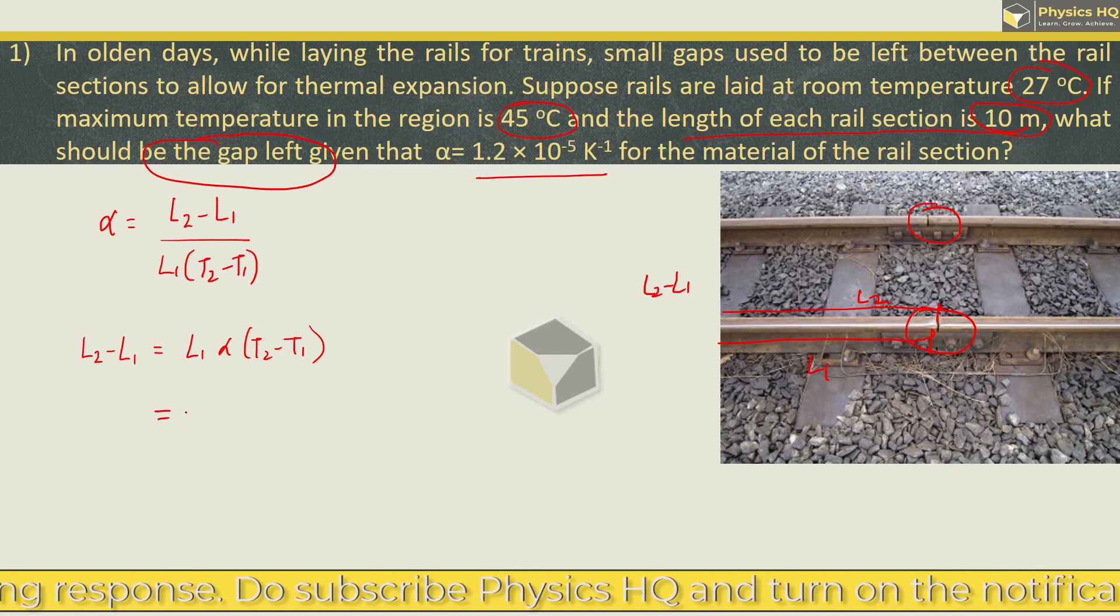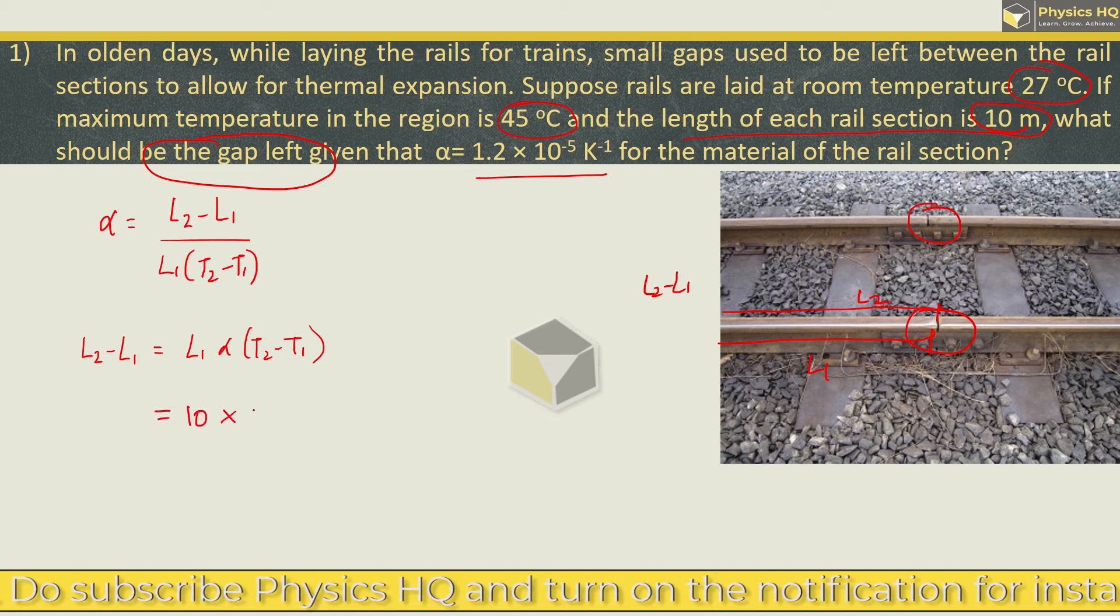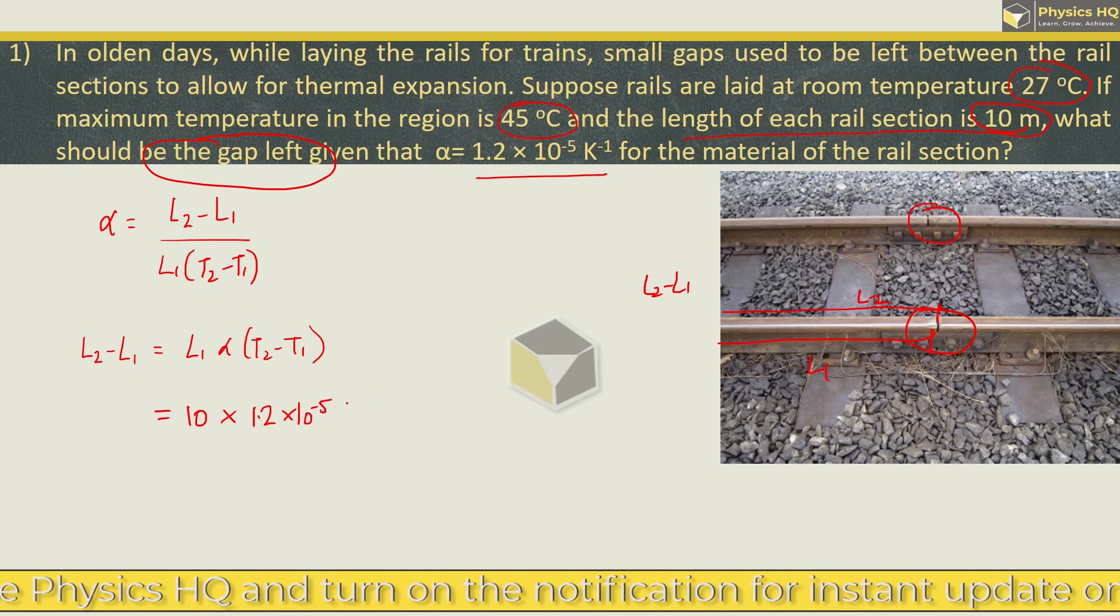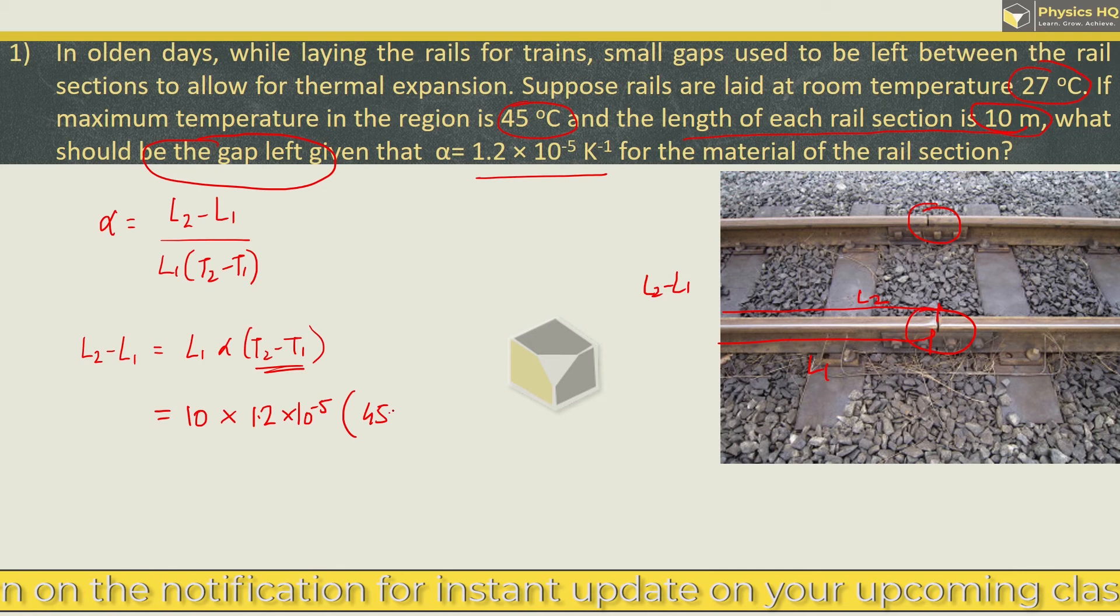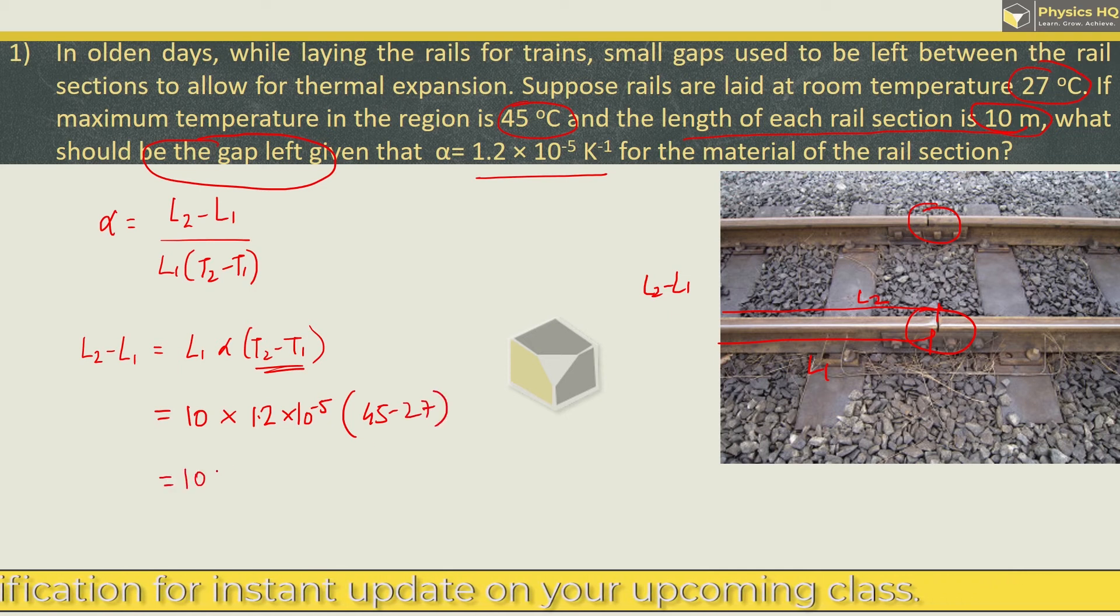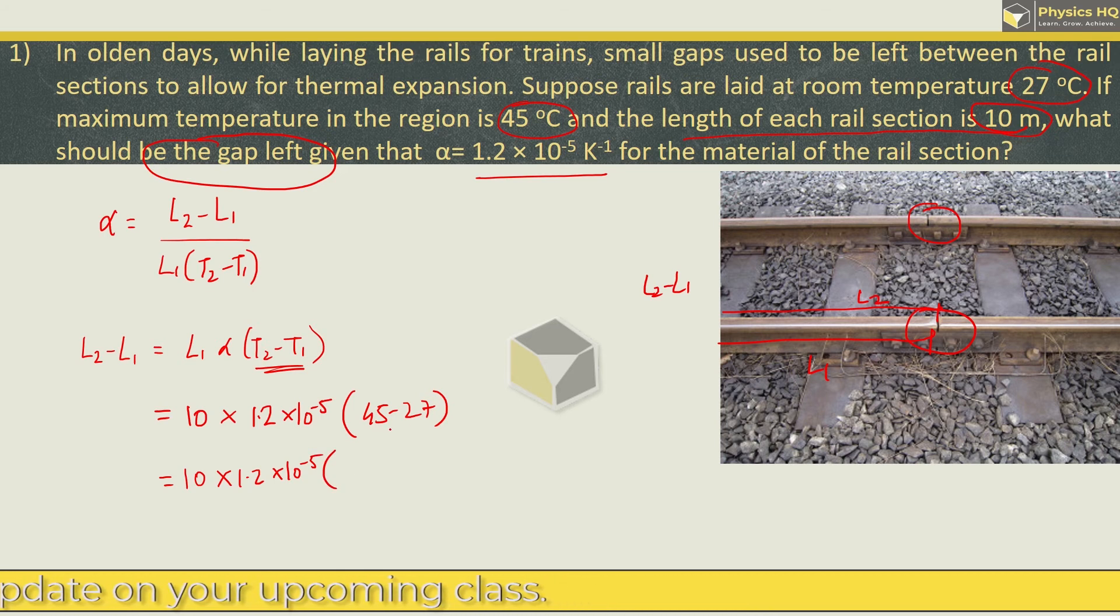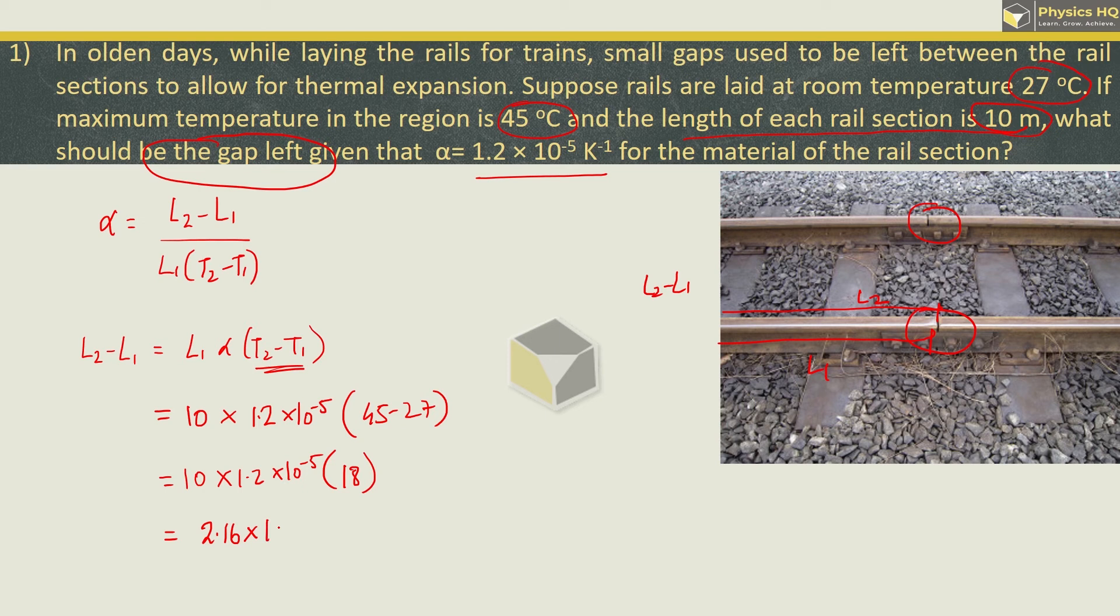So we can easily find it here. L1 is the initial length, 10 meters. Alpha is 1.2 into 10 raised to minus 5. And the difference in temperature over here is final is 45, initial is 27. So you get 10 into 1.2 into 10 raised to minus 5, 45 minus 27 will give you 18. And 18 into 1.2 is 21.6. So we can rearrange this, 2.16 into 10 raised to minus 3 meters, or it can be written as 2.16 millimeters. Hope you all understood this.